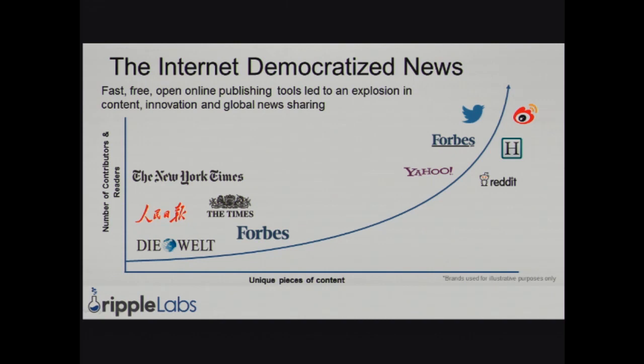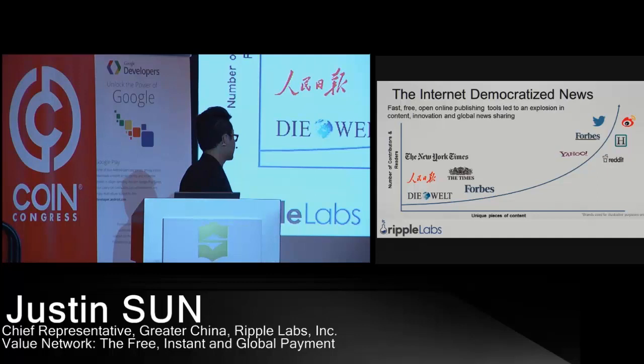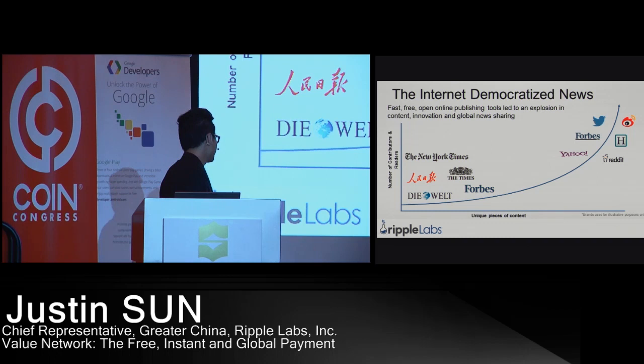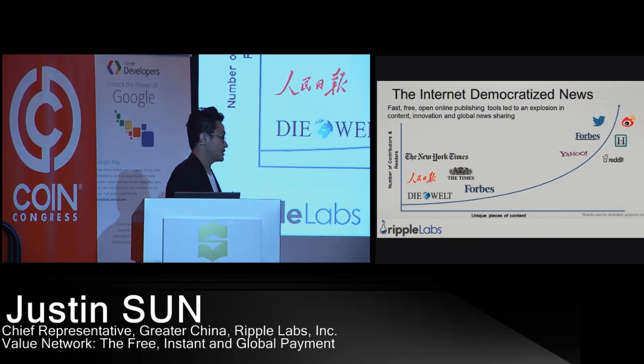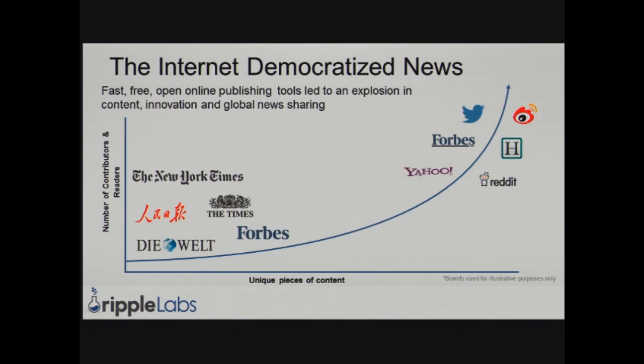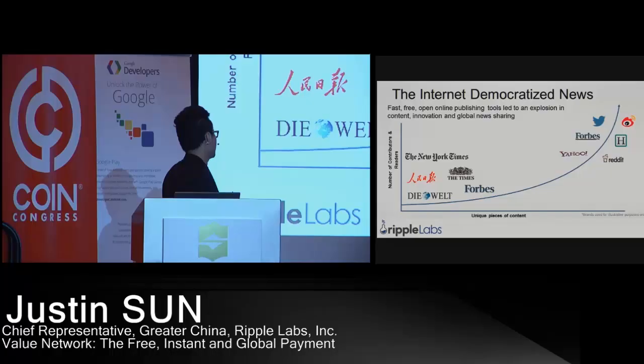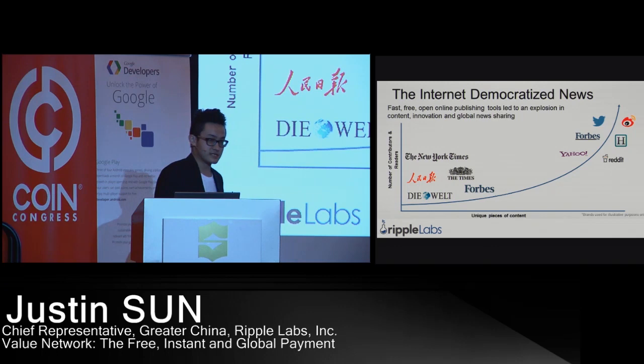The internet has already democratized news. In the past we read the New York Times daily; in China people read their newspapers. Nowadays we don't use those newspapers anymore — we use Twitter, Facebook, or Weibo in China. We can see that faster, free, and open online publishing has already taken the place of all these newspapers, and we expect the same will happen in the payment system.